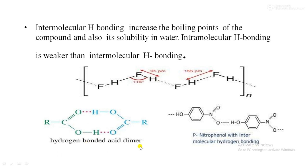In dimer form, we can see a carboxylic acid molecule forming hydrogen bonds with another carboxylic acid molecule. Here the oxygen is electronegative and creates hydrogen bonding. Similarly, another example of intermolecular hydrogen bonding is para-nitrophenol. In para-nitrophenol, the nitro group has an electronegative oxygen atom that makes hydrogen bonding with the OH group of another para-nitrophenol molecule, forming intermolecular hydrogen bonding.